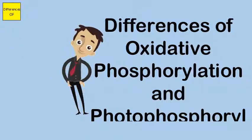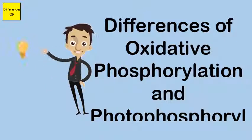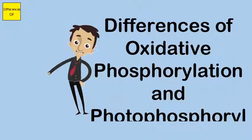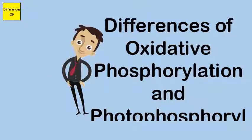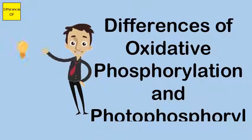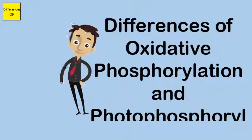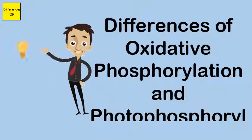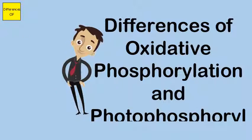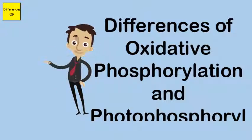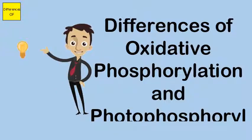Oxidative phosphorylation does not involve pigment systems. Photophosphorylation involves pigment systems, namely PSI and PSII.